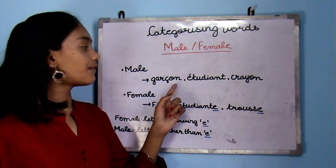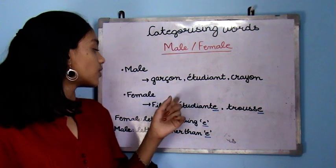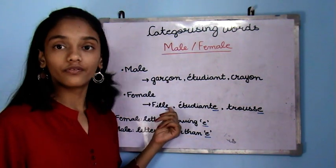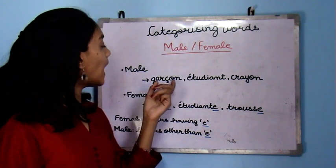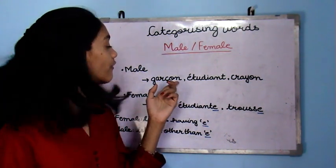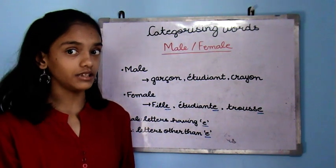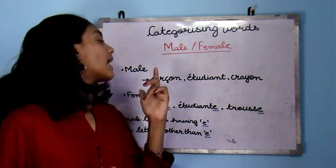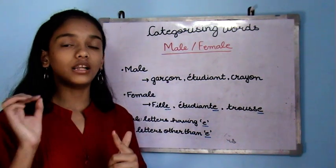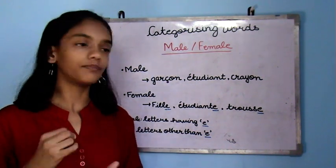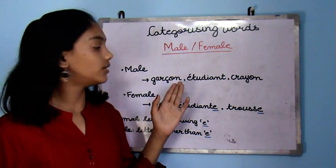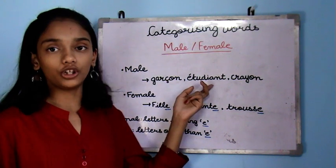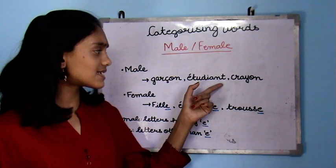I have two words here — garçon and fille. At the end of fille we have an 'e', and at the end of garçon we have a letter other than 'e'. This means that feminine words have 'e' at the end and masculine words have a letter other than 'e'. For example, garçon means boy — it doesn't have an 'e'. And étudiant, which means student, it doesn't have an 'e'.